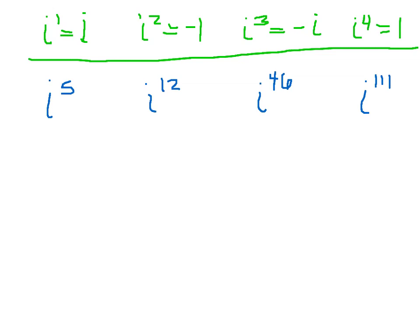If you take i to the fifth power, what our goal is, is to break that down into one of the four things: i, negative 1, negative i, or 1. i to the fifth power is the same as i to the fourth times i. And we know what i to the fourth is. i to the fourth is 1. So this is 1 times i. i to the fifth power is i.